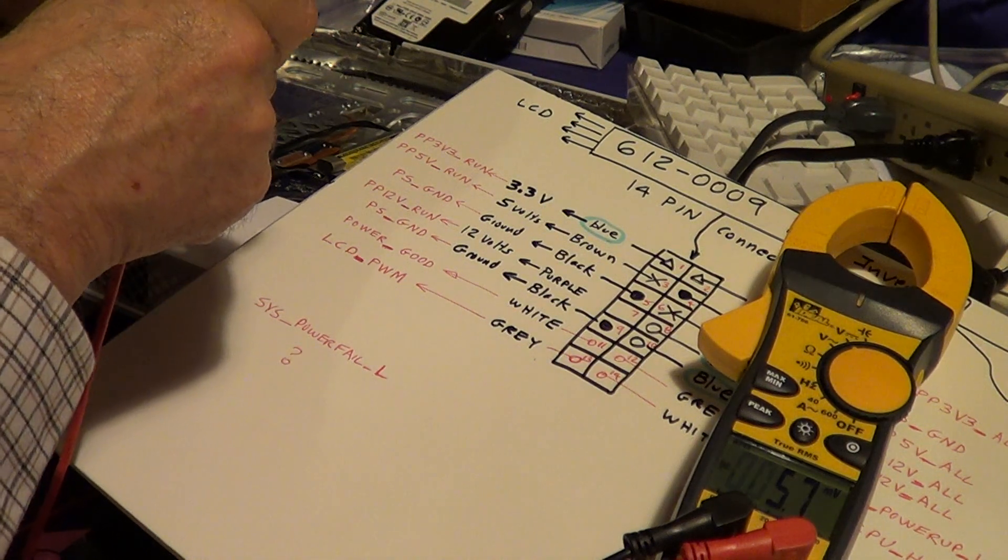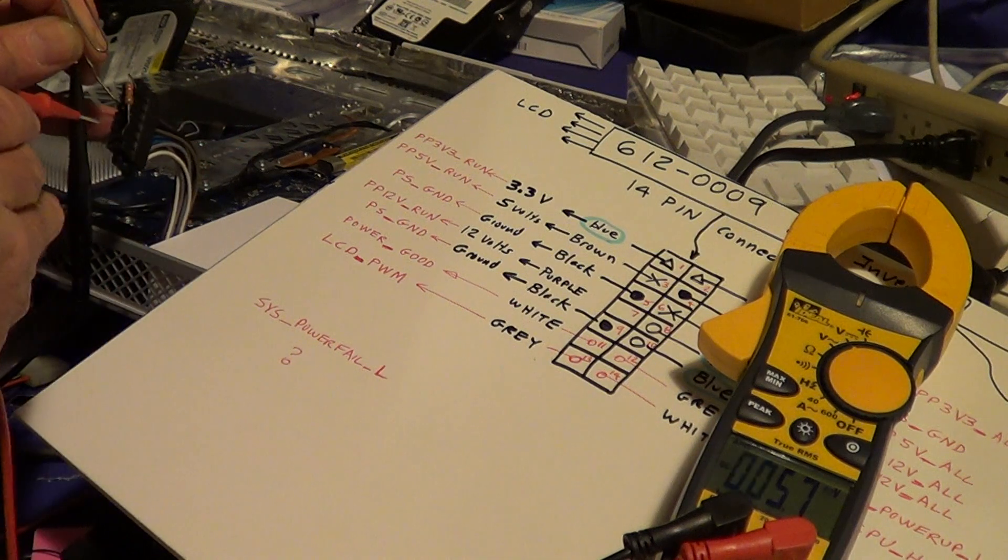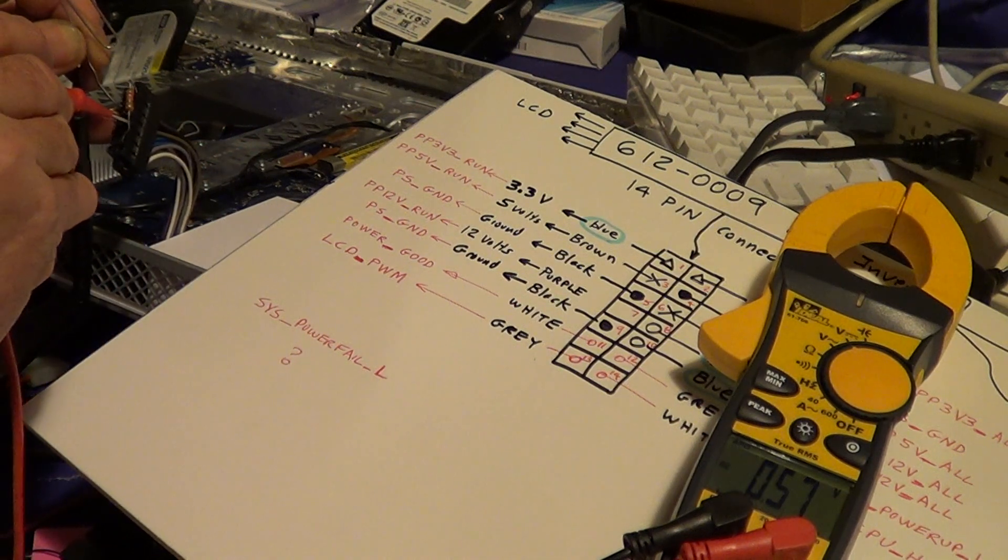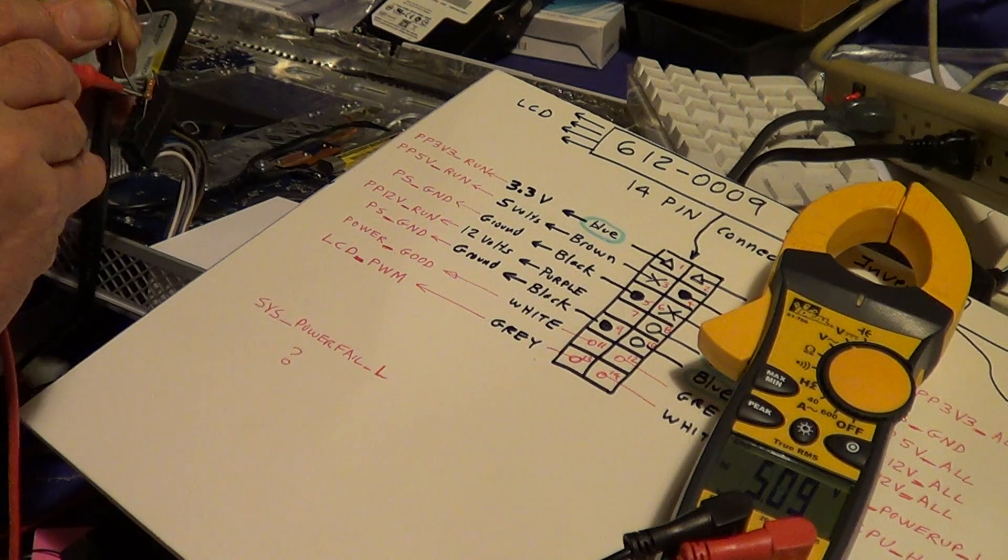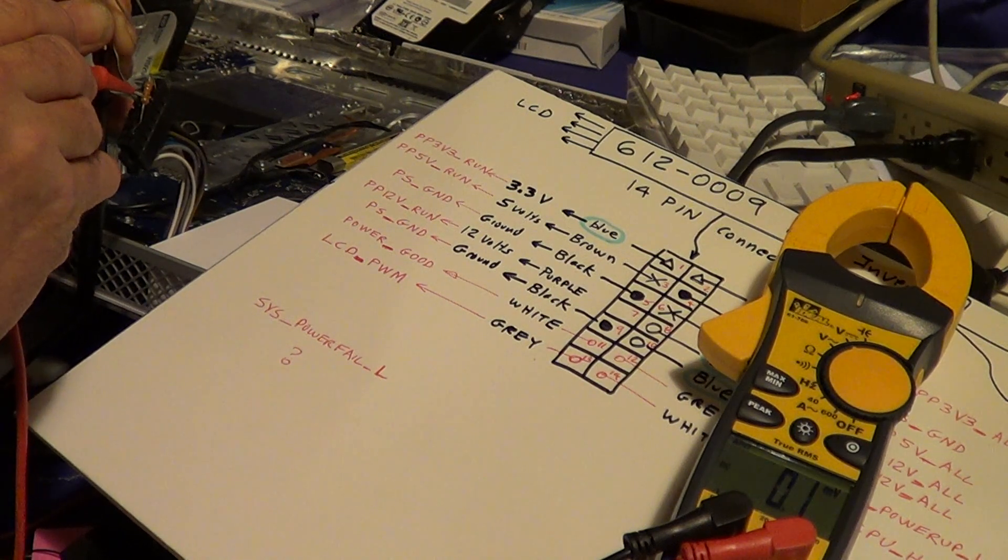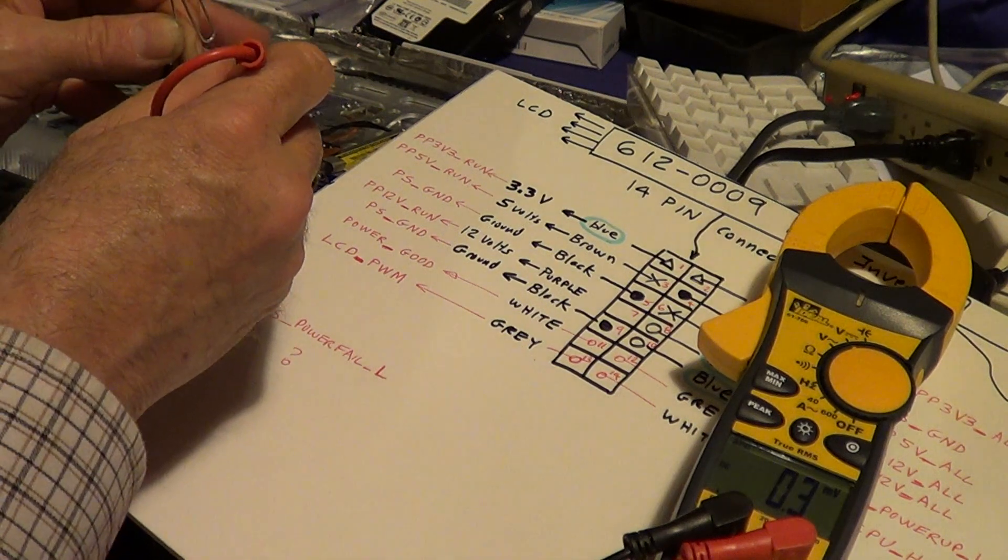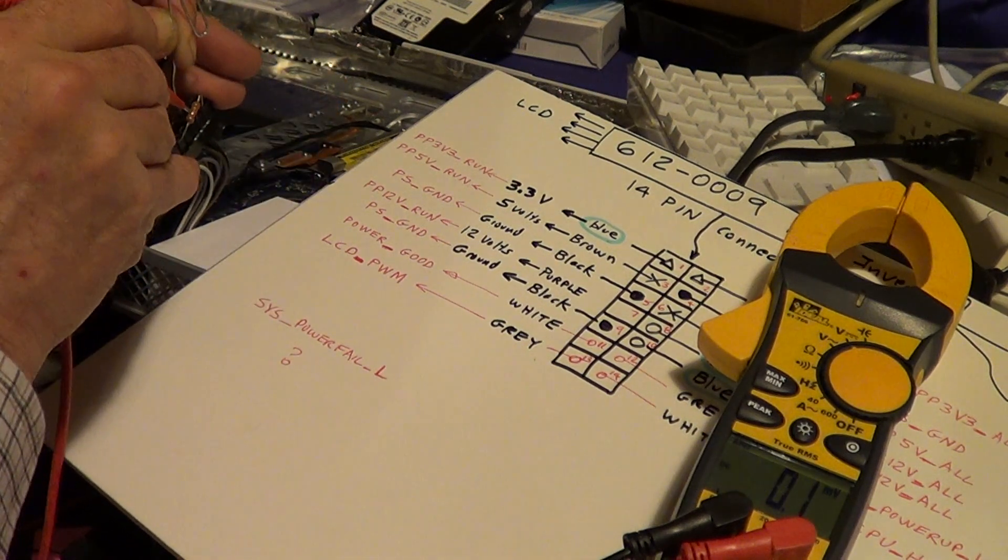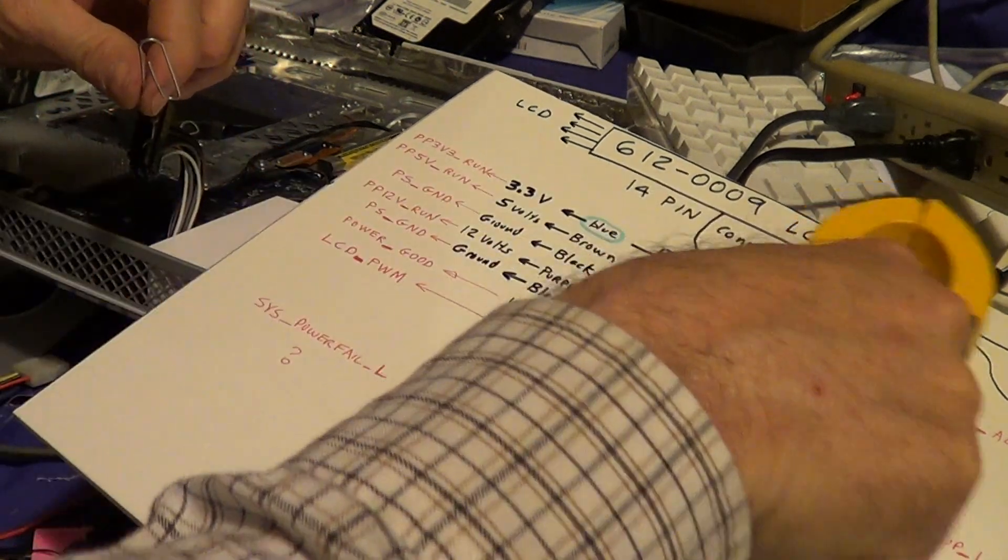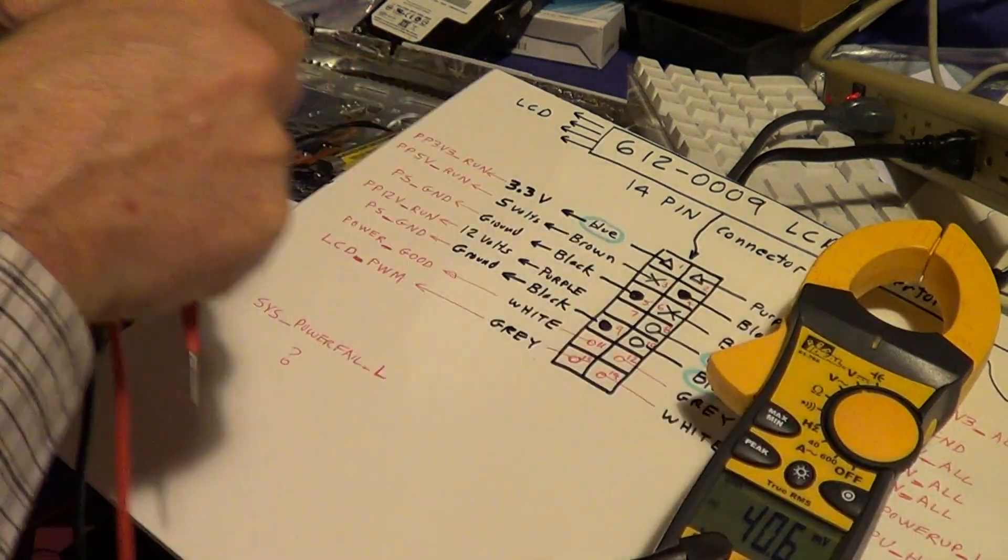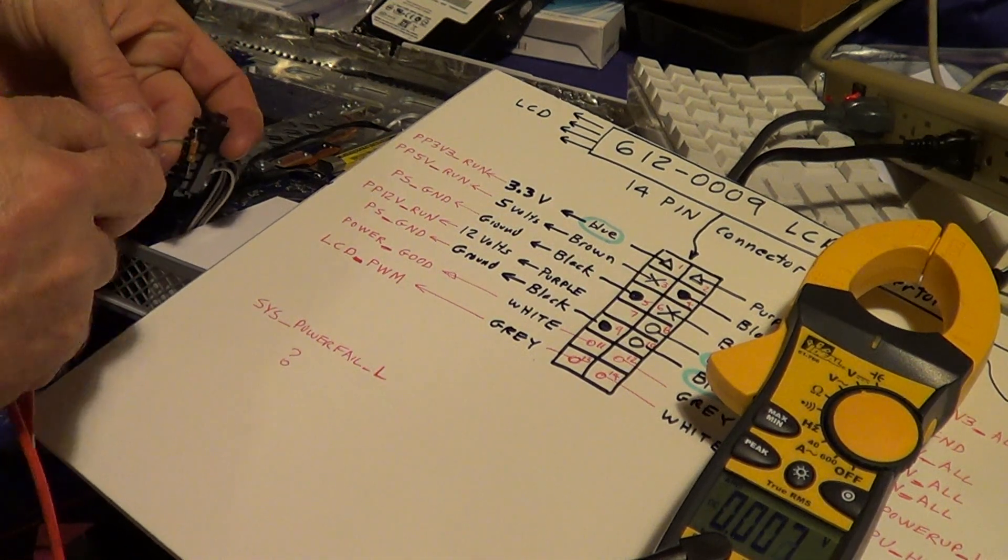Testing the V run pin - it's got nothing on it. On the other side you've got the 12V. All the voltages should be there. That one's black. You got the 5V which is the brown wire.